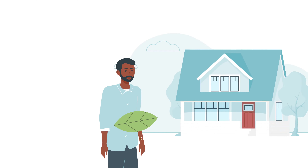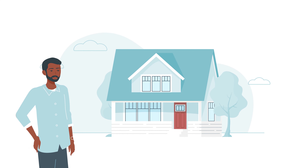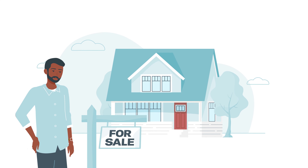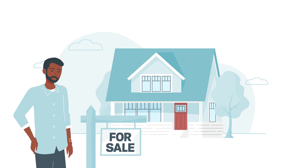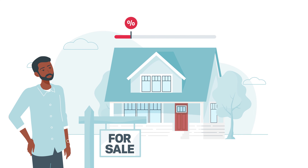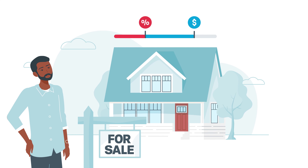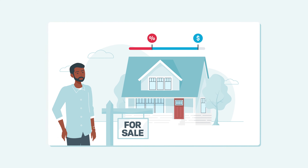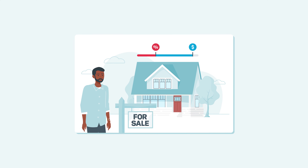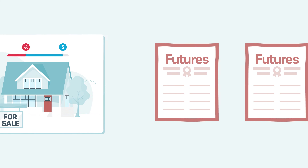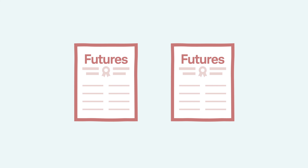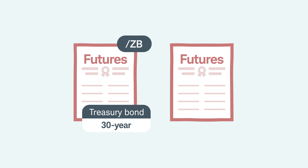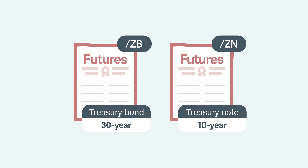Now let's look at how this might work for individuals. Say you're looking to buy a new home in a year, and you're afraid interest rates might rise and increase your mortgage payment. You could offset a potential interest rate increase by trading interest rate futures such as the 30-year U.S. Treasury bond or 10-year Treasury note, depending on your time horizon.